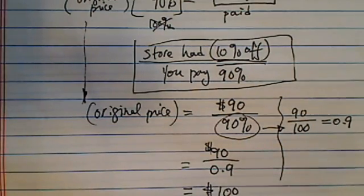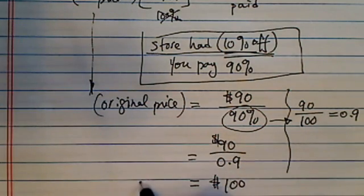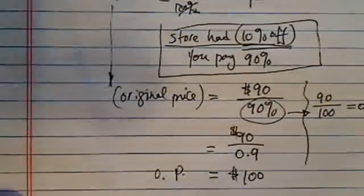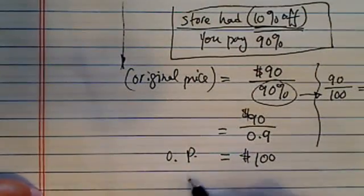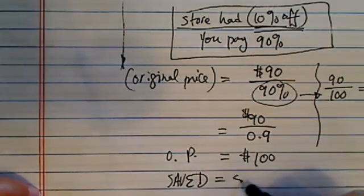You can put it in a calculator or you can do a simple fraction reduction there. So our original price is $100. And since he only spent $90, so our amount saved. So he saved $10.